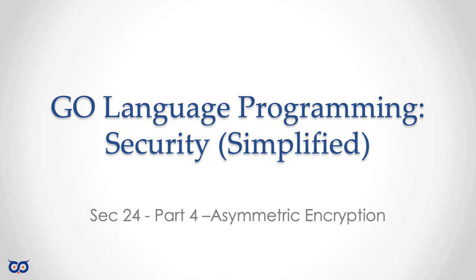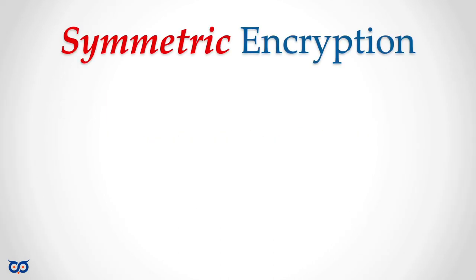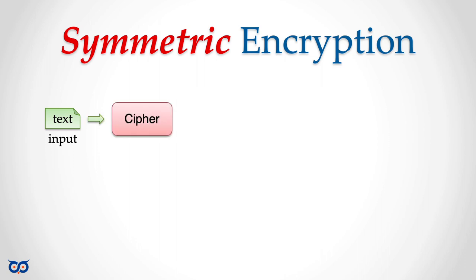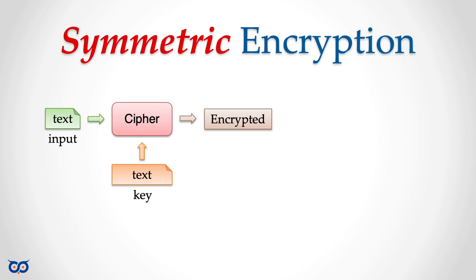Remember, this is Simplified Security, so we'll take it nice and slow. Before we can understand asymmetric encryption, let's see what symmetric encryption is. We have some input text, we feed it to a cipher along with a key, and the cipher produces cipher text — encrypted output.